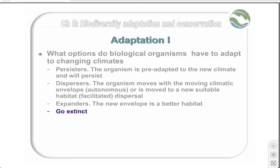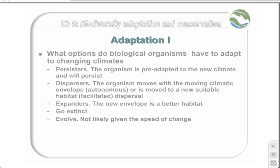Failing this, a species is likely to go extinct. We have excluded evolution as an adaptation option under the current conditions of climate change, on the basis that the current rate of climate change is considerably faster than anything historically experienced, and it is unlikely that any species other than those with the shortest life cycles will be able to evolve at the same rate. This does not exclude the possibility that some species will adapt in the future to more stable climatic conditions after the change process is complete.